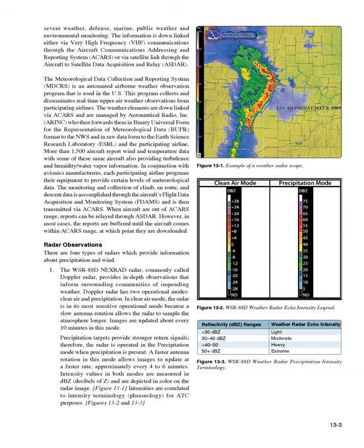2. FAA Terminal Doppler Weather Radar (TDWR), installed at some major airports around the country, also aids in providing severe weather alerts and warnings to ATC. Terminal radar ensures pilots are aware of wind shear, gust fronts, and heavy precipitation, all of which are dangerous to arriving and departing aircraft. 3. The FAA Airport Surveillance Radar is used primarily to detect aircraft, but it also detects the location and intensity of precipitation, which is used to route aircraft traffic around severe weather in an airport environment.